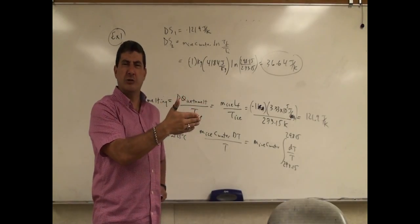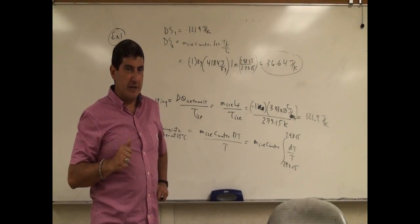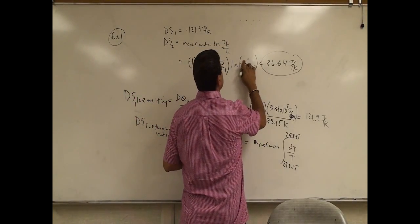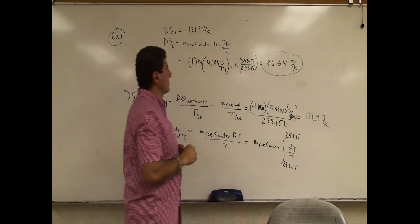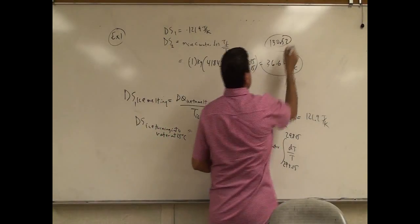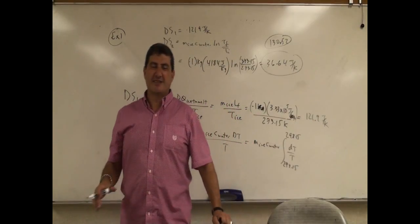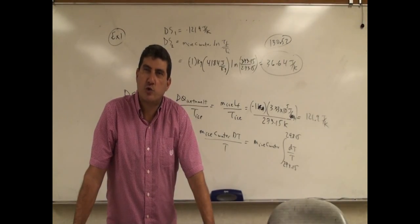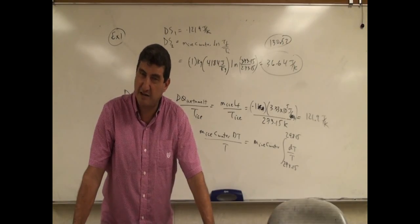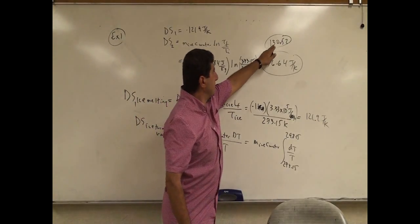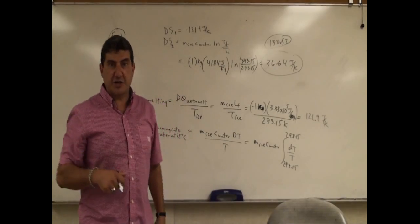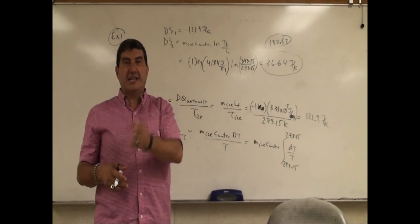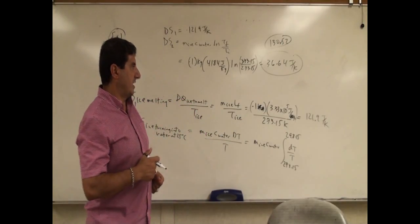What if we warmed it all the way up to 100 Celsius? Would the entropy change still be less than the change in entropy in melting the ice? If we warm to boiling — 373.15 K — the change in entropy is actually larger than the change in entropy from melting. So the warming entropy reaches the melting entropy somewhere around 85–90 Celsius. That could be a good test question: find the temperature at which the entropy of warming water from zero equals the entropy of melting the ice.